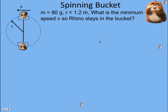Take a look at another vertical circle problem. We had one with the Ferris wheel. Now we have a bucket attached to a string or bar, and they're spinning the bucket around in a vertical circle with Rhino the hamster inside. The first question is what is the minimum speed so Rhino stays in the bucket, so he doesn't lose contact with the bottom of the bucket.